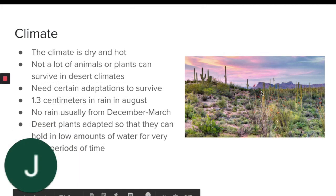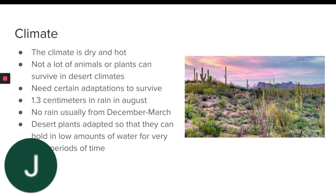The climate of the desert is extremely dry. During the day it is very hot, but the temperature can drop drastically, making it very cold at night. Most animals and plants cannot survive in climates like this, so the ones that do have certain adaptations in order to thrive in the desert climate.